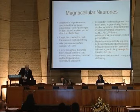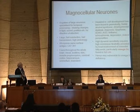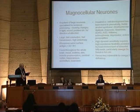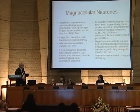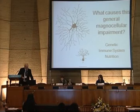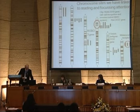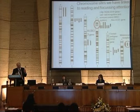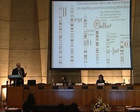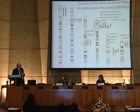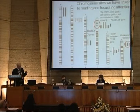The magnocellular neurons are a whole system specialized for temporal processing, and they are very vulnerable to omega-3 fish oil deficiency. So what causes this general magnocellular impairment? I'm going to talk about two aspects. First, genetics: running clinics for 20 years, we've amassed large numbers of families with dyslexia and set up a genetic study. There are about 10 genes currently in the frame; I'll focus on two we've found ourselves.